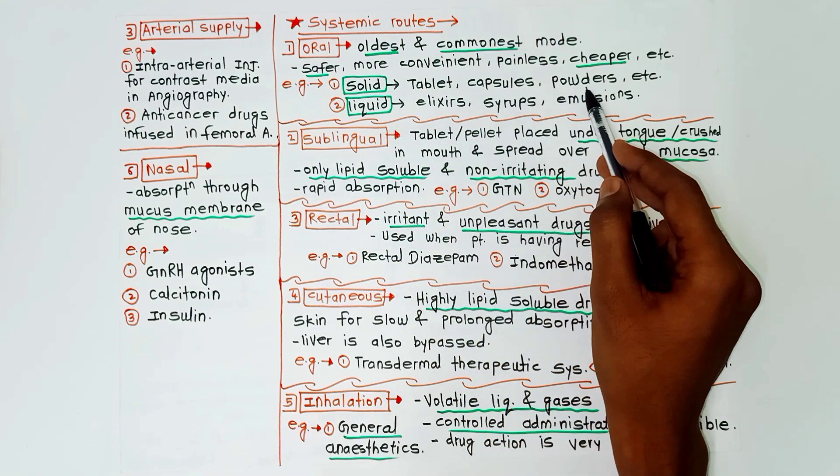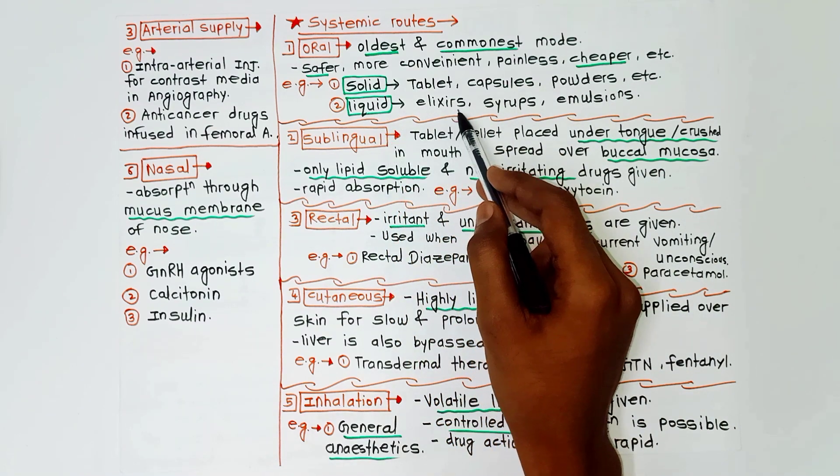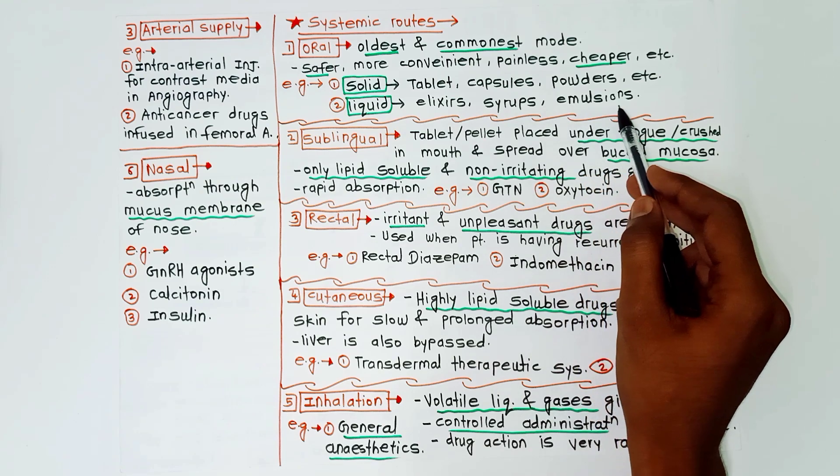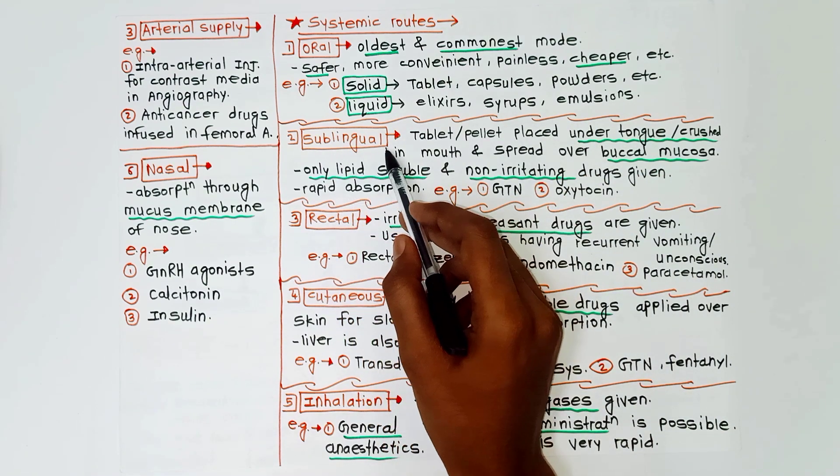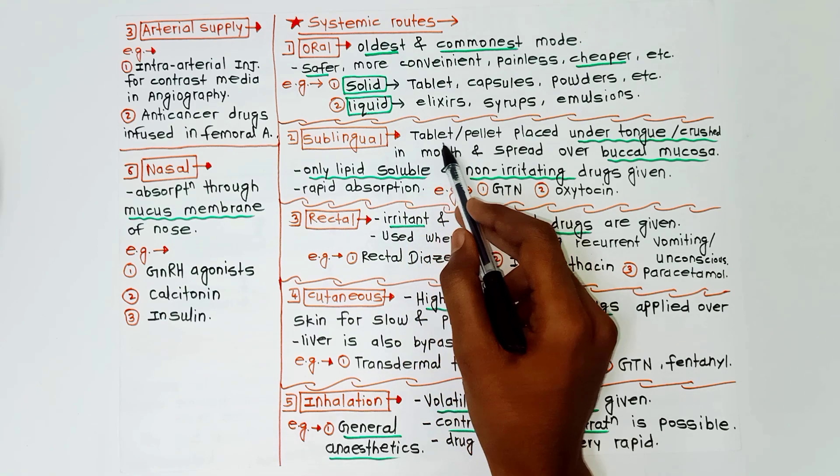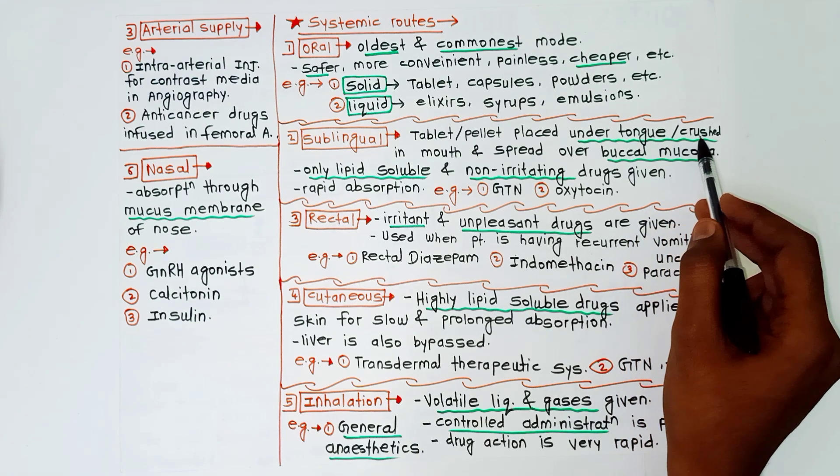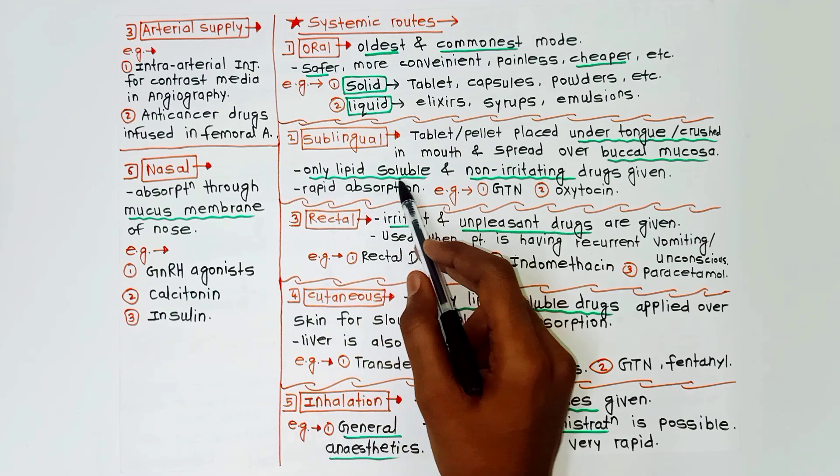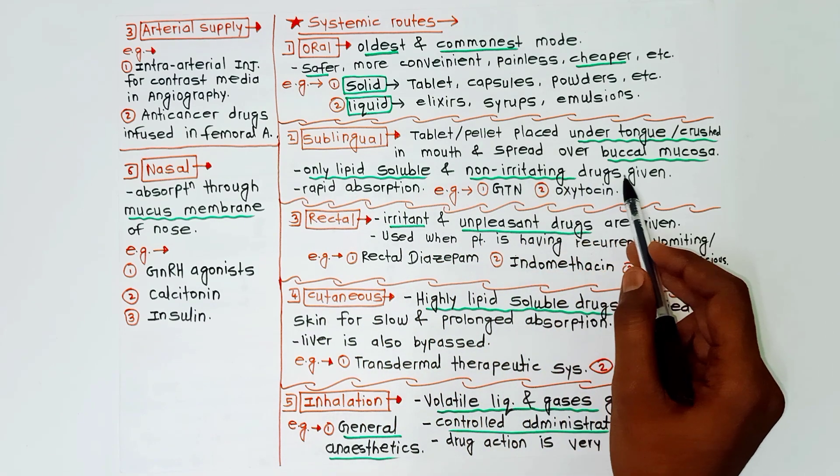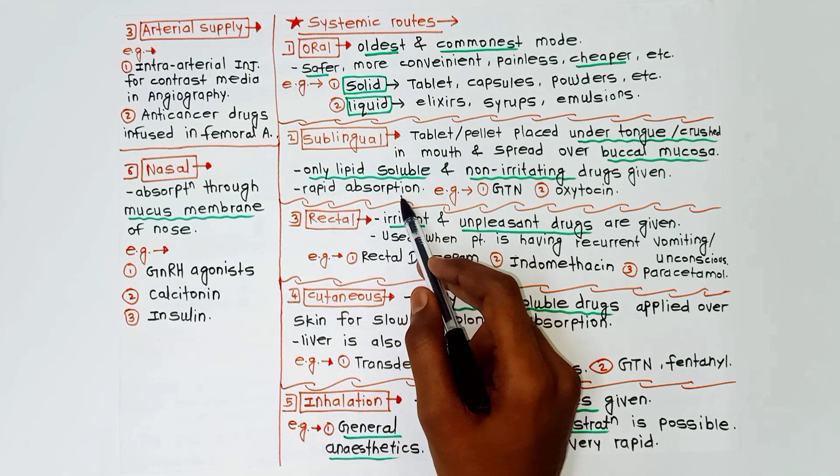Examples of oral route are solid forms like tablets, capsules, powders, and liquid forms like elixirs, syrups, emulsions. Next is sublingual route. The tablet or pellet is placed under the tongue or crushed in the mouth and spread over the buccal mucosa. Only lipid-soluble and non-irritating drugs are given by this route. Rapid absorption occurs, and examples are GTN and oxytocin. GTN is glyceryl trinitrate.